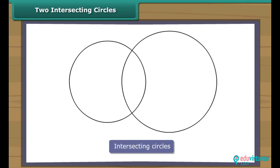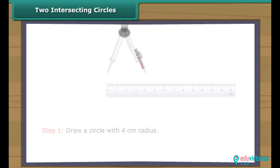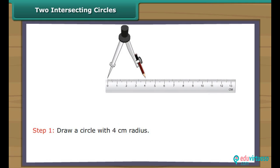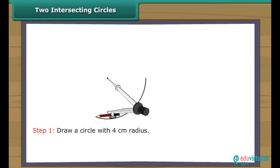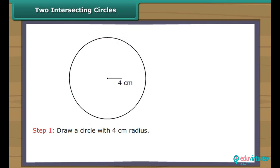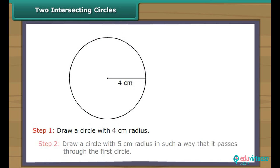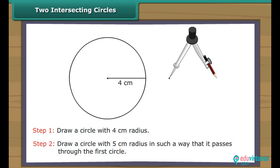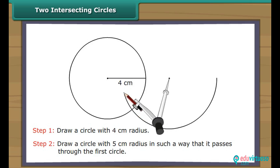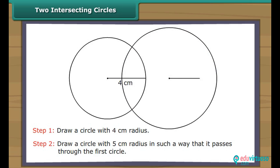Two intersecting circles. Intersecting circles may or may not have the same radii. Let us now draw intersecting circles. Draw a circle with four centimetres radius. Draw a circle with five centimetres radius in such a way that it passes through the first circle. We have two intersecting circles.